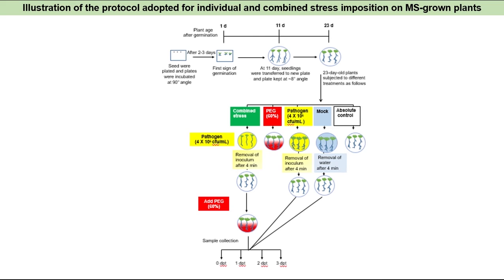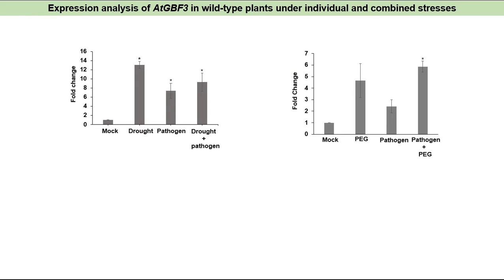We analyzed ATGBF3 expression pattern in wild-type plants under individual and combined stress. We found ATGBF3 was upregulated under drought, pathogen, and combined stress in soil-grown plants.